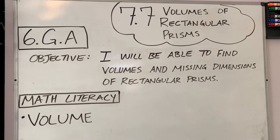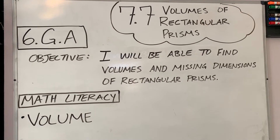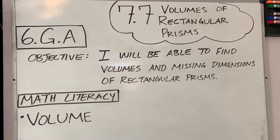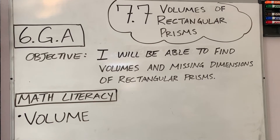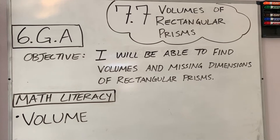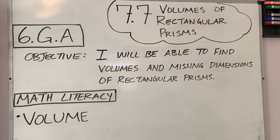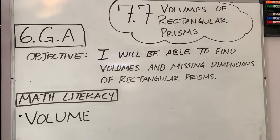All right, ladies and gents, welcome back to another episode of Math with Mr. Young. Today, we're working with 7.7 volumes of rectangular prisms.